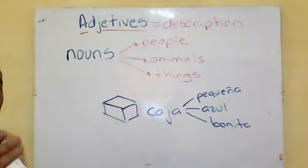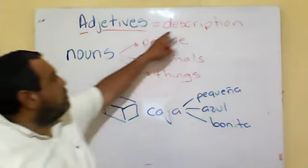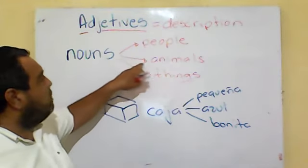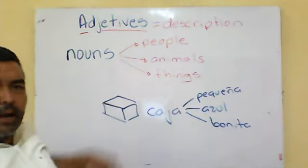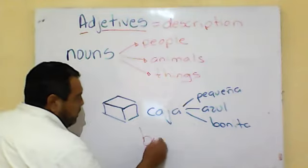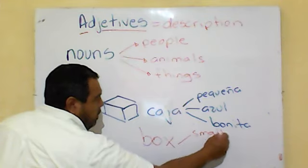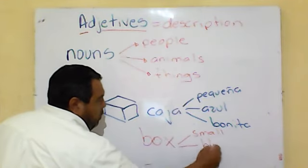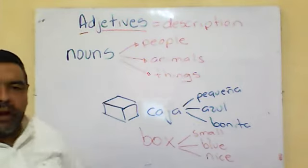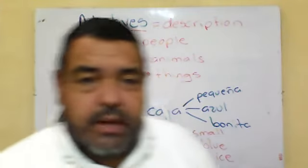So, now, for those of you who do understand English, adjectives are description. It's a description of a noun. Noun can be people, animals, or things. Right now, what we have here is a caja, I can say a box. The box can be small, the box can be blue, or the box can be nice. So, I got three adjectives for the box. Now, I'm going to show you how do we use them in English.